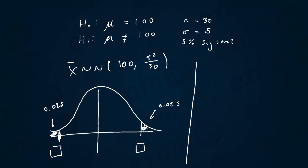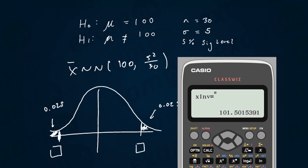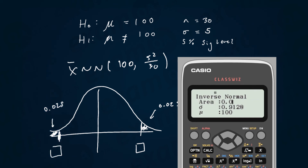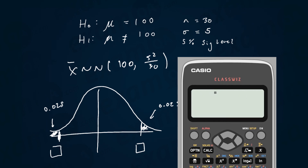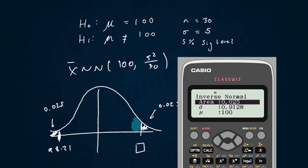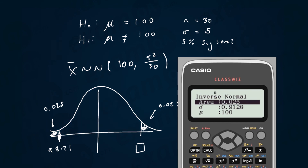Very straightforward — literally the same thing we've been doing. For the lower value, I'm going to go to the calculator and put area 0.025, sigma = 5 over root 30, and mean 100. That gives our lower critical region of 98.21 to 4 significant figures. For the upper value, the area less than it is 1 − 0.025 = 0.975, keeping everything else the same.